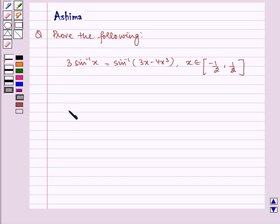Before starting the solution, let us write the identity which we will be using in the question: sine 3 theta equals 3 sine theta minus 4 sine cube theta. This is the key idea towards our question.